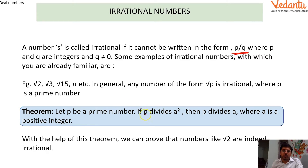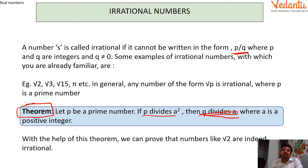In this proof we will also use the Fundamental Theorem of Arithmetic: if p is a prime number and p divides a², then p also divides a. This theorem will be relevant as we work through the proof. You do not need to prove this theorem yourself — it is given in the textbook. Let's start.